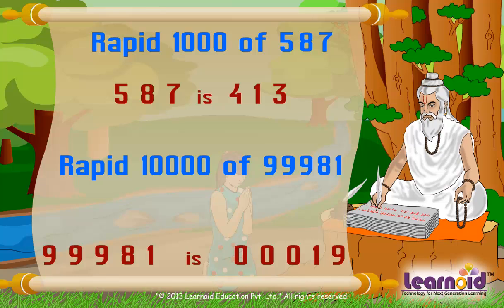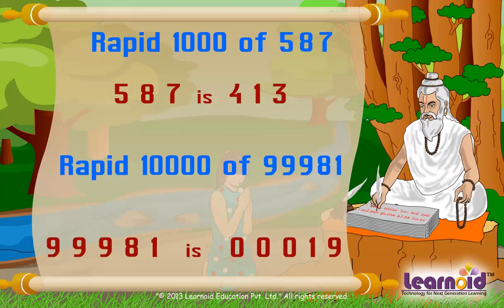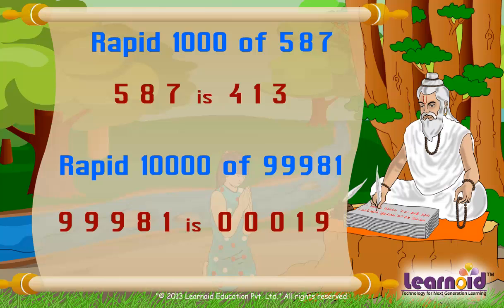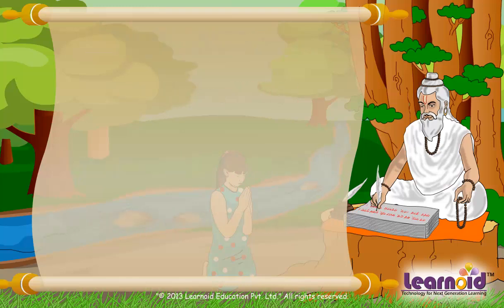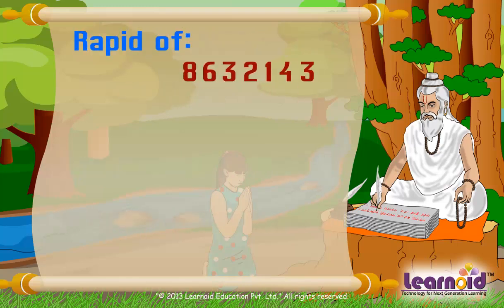Subtract all from 9 and last from 10. We use Nikhilam Sutra to find the rapid to the nearest base. Let's try for 8632143 — the rapid is 1367857. Can you do the subtraction mentally?